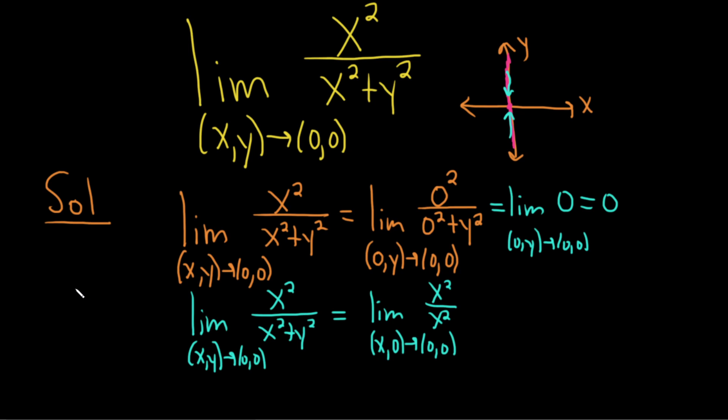And just for fun, let me come over here and give you the picture. So here's the x-axis and here's the y-axis. And so in this case, y is equal to 0, so we're on the x-axis and we're approaching 0. So we're going this way and this way. Let me use a different color here. Let's do yellow. So we're approaching (0,0) along the x-axis. We're approaching this point here.